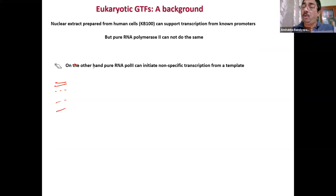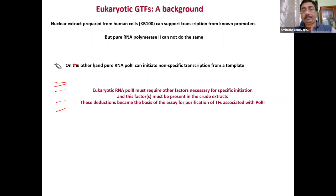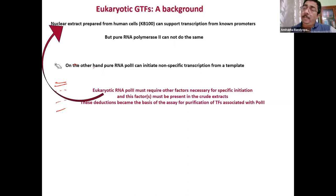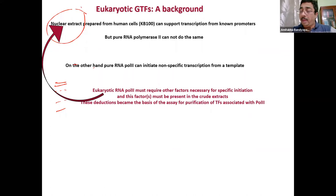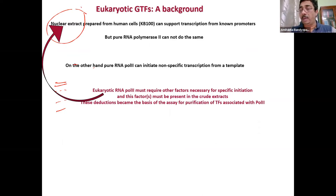If you take pure RNA polymerase, it can initiate transcription weakly but non-specifically. Therefore, Bob Roeder deduced that if pure RNA polymerase cannot initiate transcription from the promoter, it must require some other factors — and those factors must be present in the crude nuclear extract. That became the basis of the assay for purification of transcription factors associated with RNA polymerase.